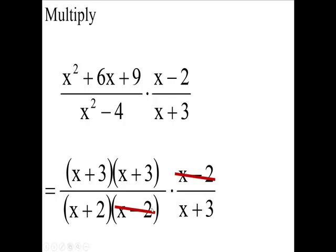Reduce them, simplify it. And look at the (x + 3) and (x + 3), these two can be canceled. That's going to leave me (x + 3) over (x + 2) as my final answer.